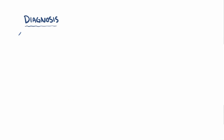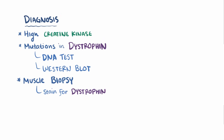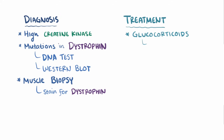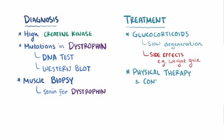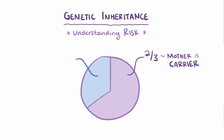For diagnosis, people with Duchenne or Becker muscular dystrophy often have a high creatine kinase level, and the diagnosis can be confirmed by looking for mutations in dystrophin by either DNA tests or Western blot, as well as having a muscle biopsy with staining for dystrophin. Unfortunately, there are no great treatments — glucocorticoids can sometimes slow degeneration but can cause side effects like excessive weight gain, and physical therapy can improve quality of life but doesn't reverse the underlying process. About two-thirds of the time the person's mother is a carrier, and the other third of the time the disease is sporadic, caused by a new mutation.